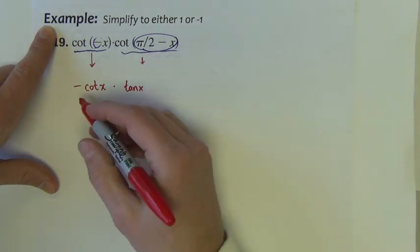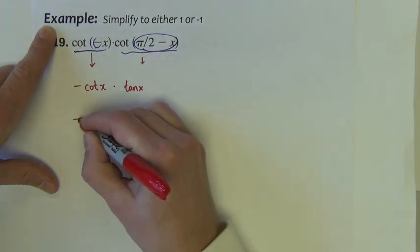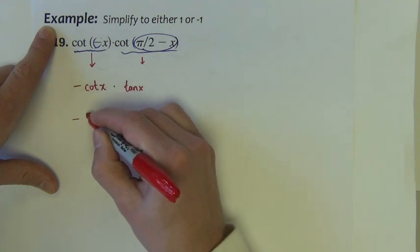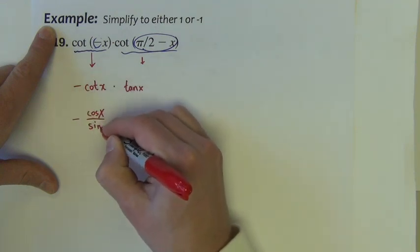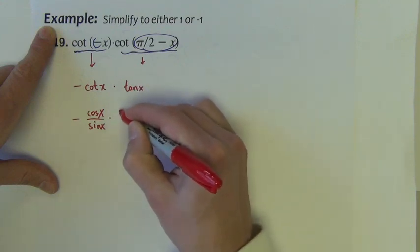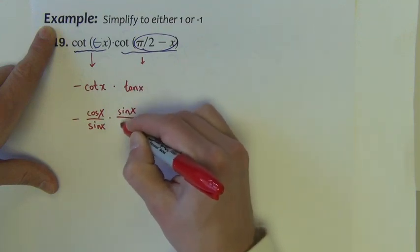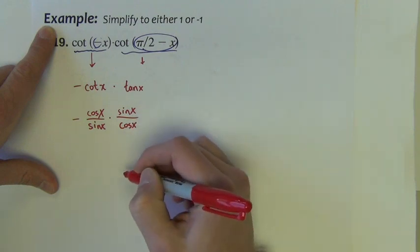I'll show you one of them. From the quotient identities, cotangent is equal to cosine x over sine x. Tangent is equal to sine x over cosine x.